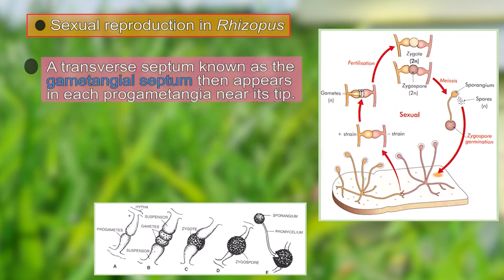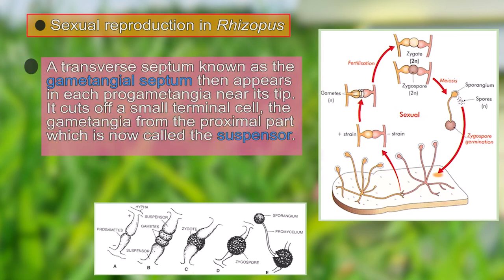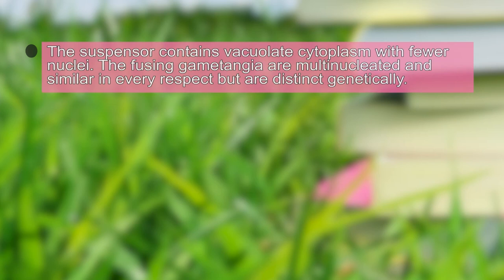These swellings are now known as progametangia. A transverse septum called the gametangial septum appears on each progametangia near its tip, cutting off the terminal cell from the proximal part. The proximal part is known as the suspensor. The gametangia developed from the plus strain and the minus strain now come close to each other; the suspensor contains vacuolate cytoplasm with few nuclei.